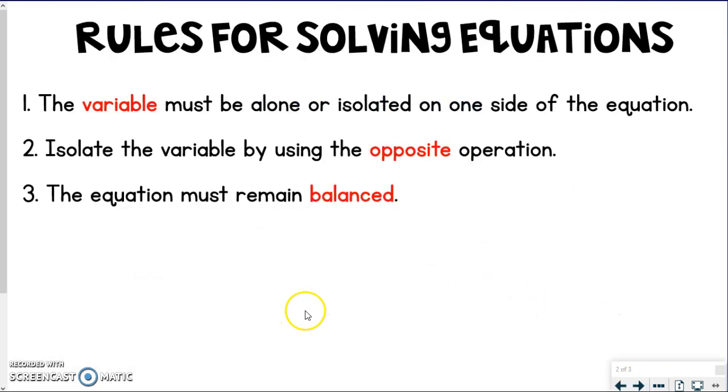Here are the rules for solving equations. The whole goal for the equation is to find what the variable is. The variable must be alone or isolated on one side of the equation. So we're always looking at that side with the variable and figuring out what's happening to it. In order to isolate the variable, you need to do the opposite operation. You need to undo whatever's happening to it. And the equation must remain balanced. It has to stay balanced.